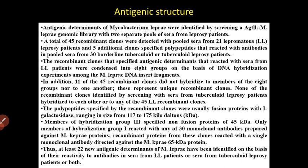In addition, 11 of the 45 recombinant clones did not hybridize to members of the eight groups nor to one another — these represent unique recombinant clones. The polypeptides specified by the recombinant clones were usually fusion proteins with beta-galactosidase, ranging in size from 117 to 175 kilodaltons. Members of hybridization group 3 specified non-fusion proteins of 45 kilodaltons. Group 1 reacted with any of the 30 monoclonal antibodies prepared against MK3 proteins.